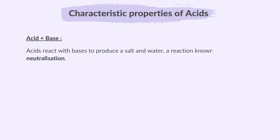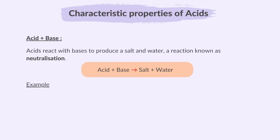Acids react with bases to produce a salt and water — a reaction known as neutralization. A neutralization reaction is a chemical reaction between an acid and a base resulting in the formation of a salt and water. For example, sulfuric acid reacts with potassium hydroxide, which is a base, and the products are potassium sulfate, which is a salt, and water.